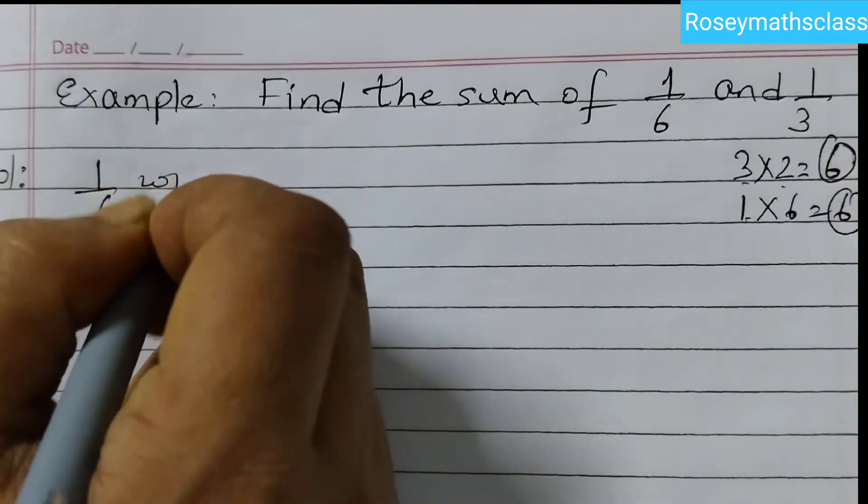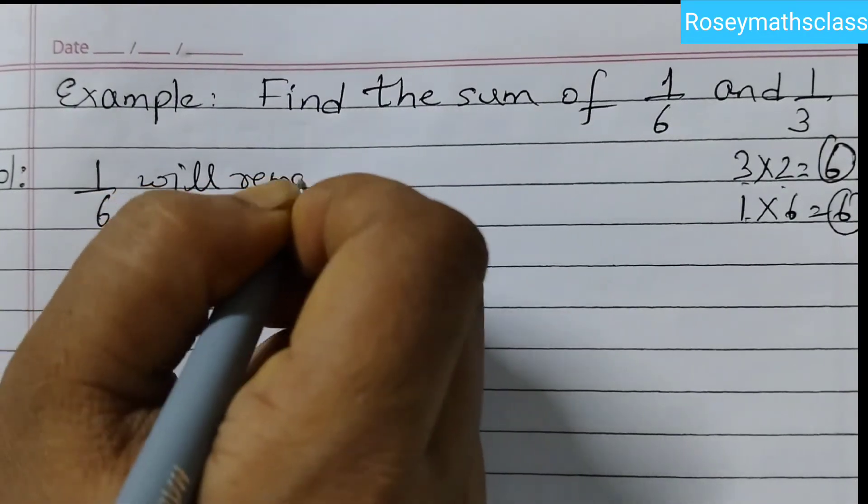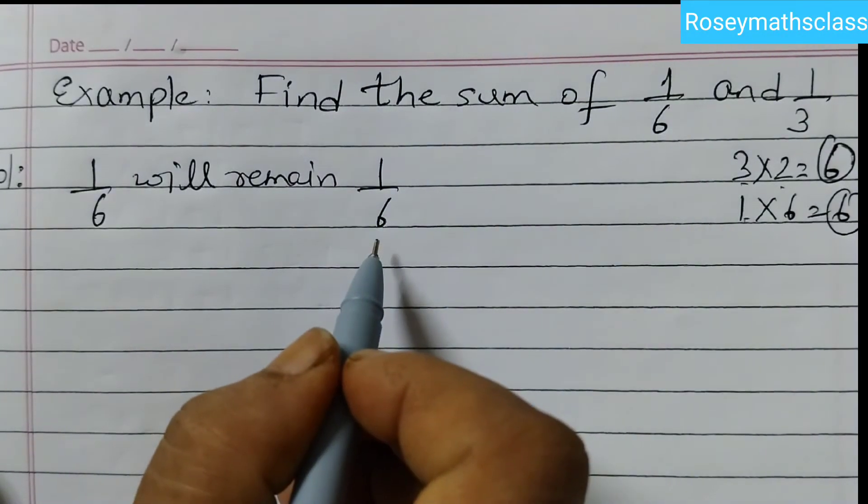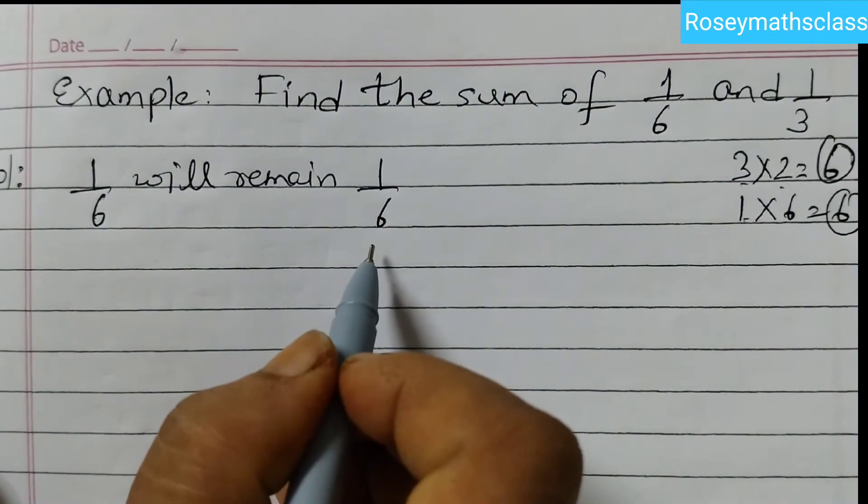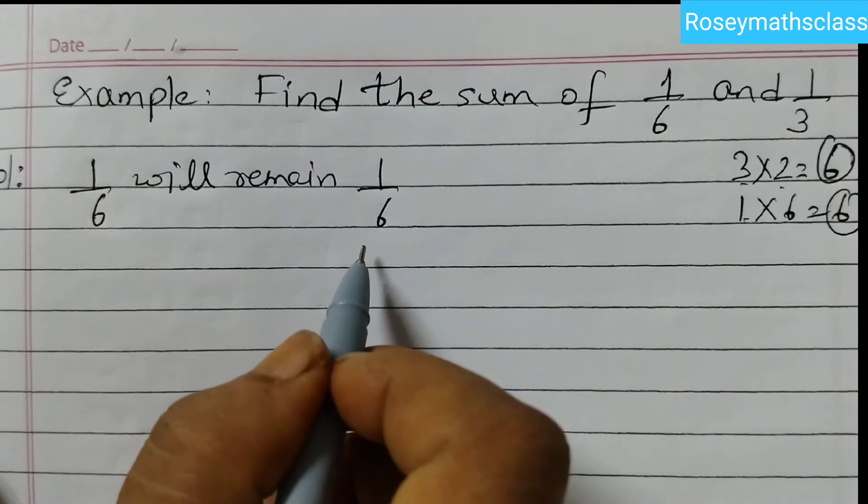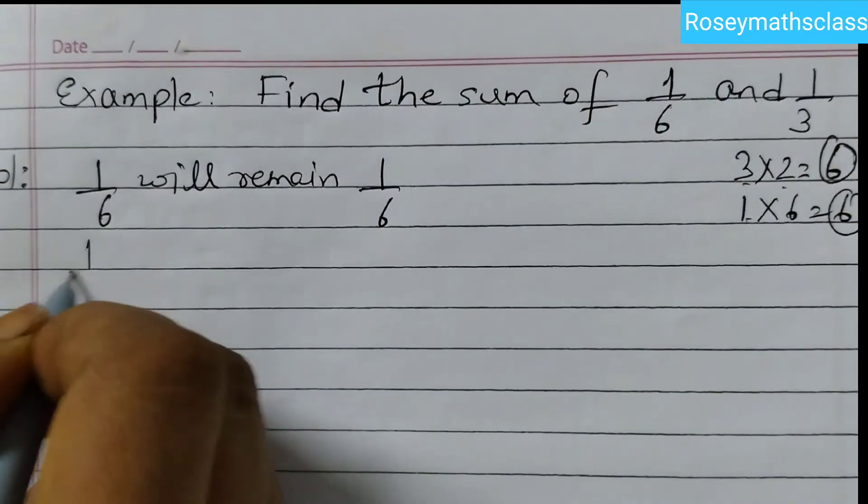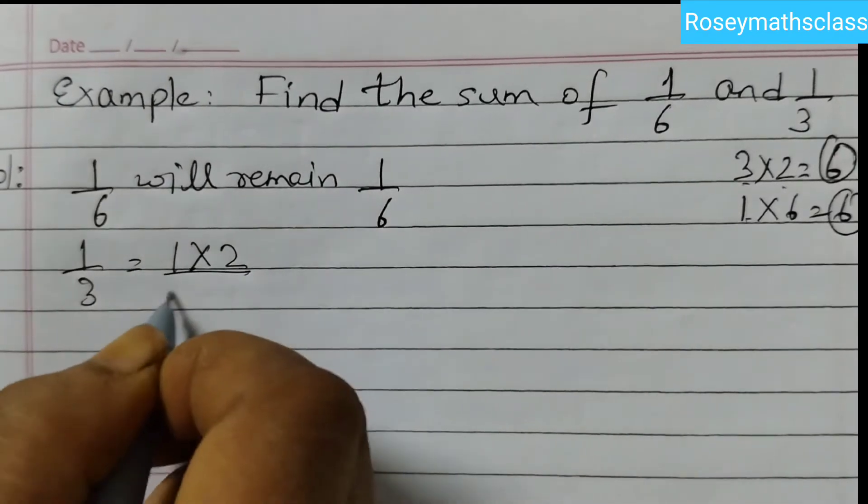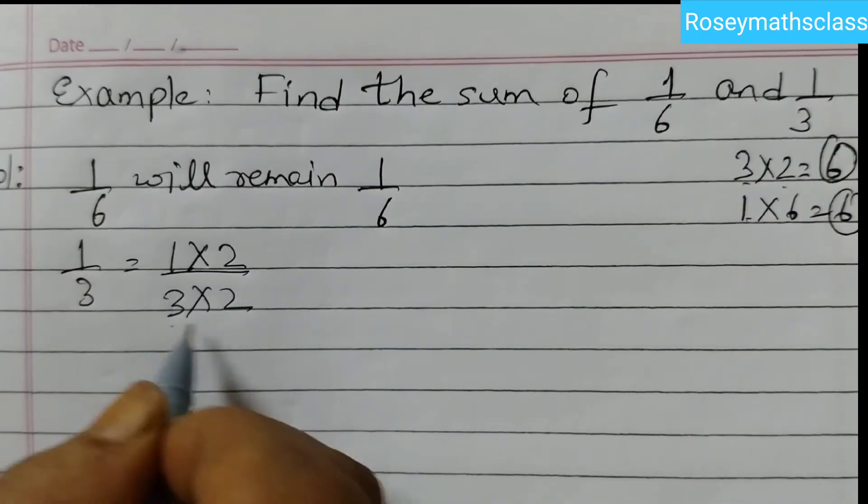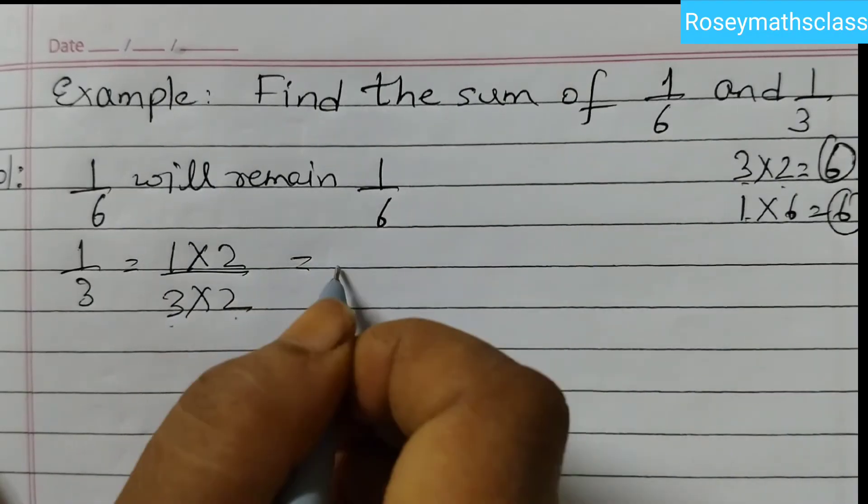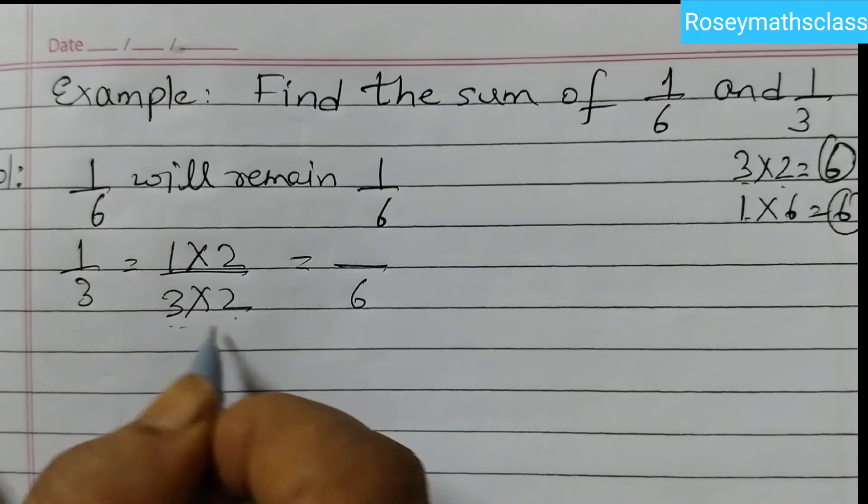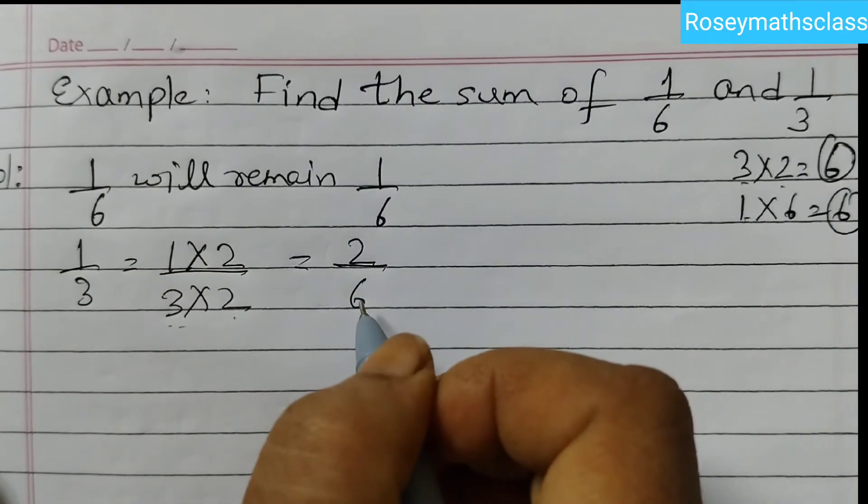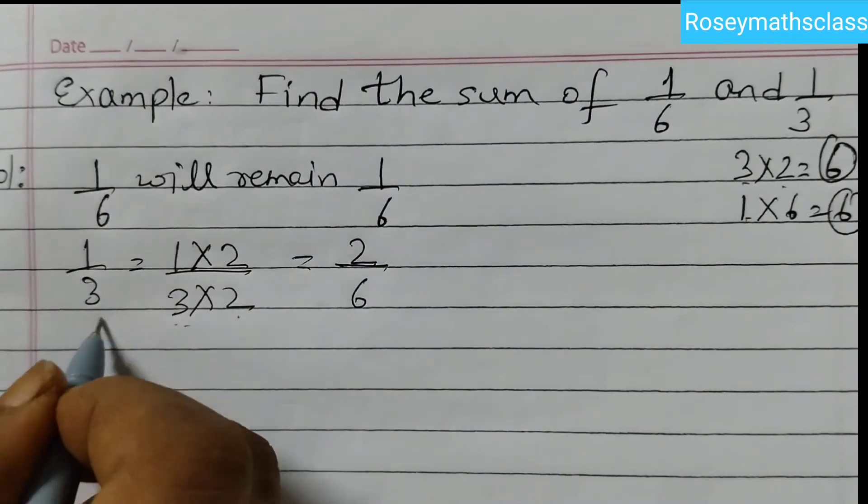So 1 by 6 will remain 1 by 6 because it already has a denominator of 6. So we need not do anything, it will remain as it is. And 1 by 3 will become 1 into 2 and 3 into 2. We are multiplying by 2 so that we get the denominator as 6. 3 into 2 is 6, 1 into 2 is 2.